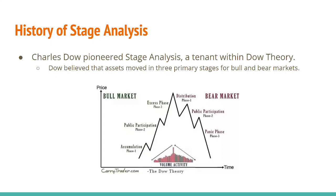Next we have phase two, which is public participation. This is when you first start hearing the news and good fundamentals about an asset. Then we have the excess phase — this is when everyone and their mother is trading or investing in a single asset. All you hear are great things, how this asset is never going to lose value, its growth is unlimited and infinite, it's just going to keep going up forever. This is also known as the euphoric phase within stage analysis.